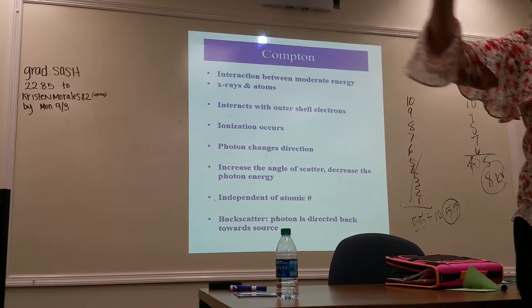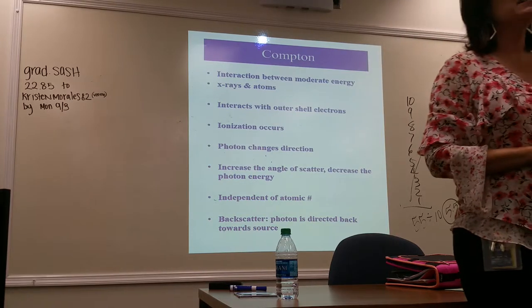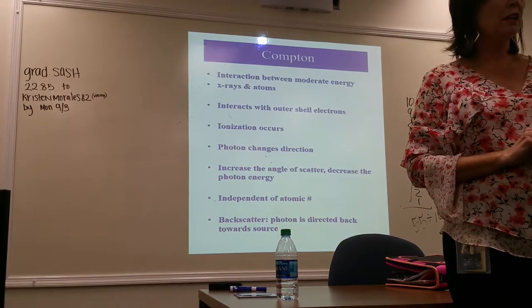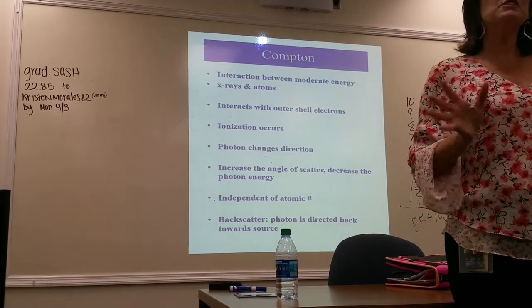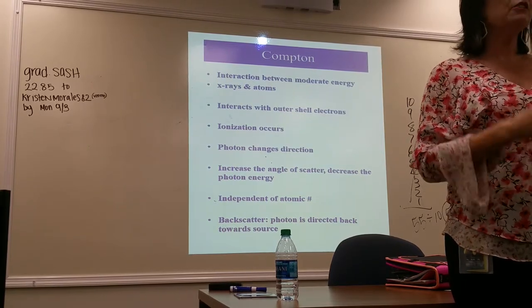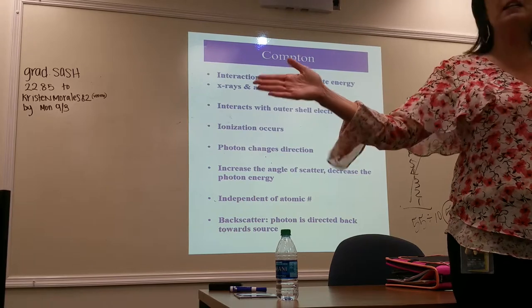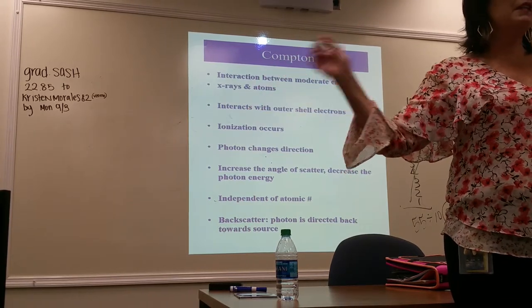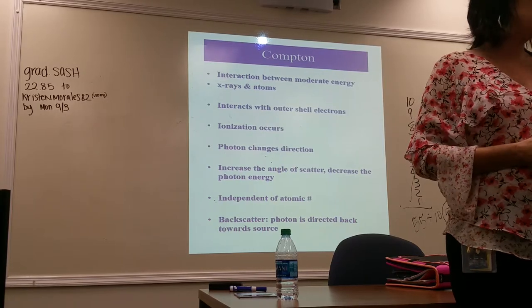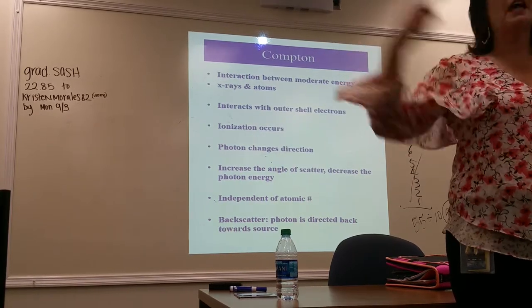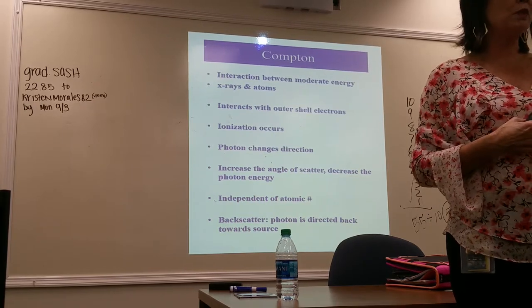Radiation that is scattered backwards towards the source can retain up to two-thirds its original energy. It can be pretty strong. The best place to stand is at 90 degrees. From zero to 90 degrees, the greater the angle, the weaker the scatter. But that doesn't necessarily apply to backscatter.